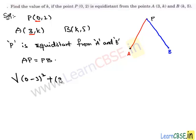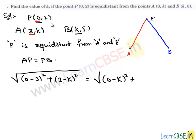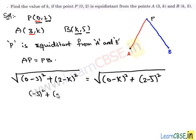Here the x-coordinates are 0 and 3, so we have (0−3) squared, and the y-coordinates are 2 and k, giving (2−k) squared. Similarly, the distance PB uses x-coordinates 0 and k, giving (0−k) squared, and y-coordinates 2 and 5, giving (2−5) squared. Squaring both sides: (−3)² + (2−k)² = (−k)² + (−3)².